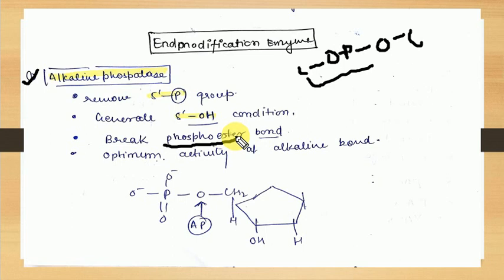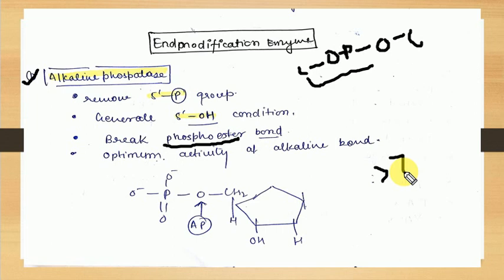After breaking the bond, alkaline phosphatase generates a 5 prime OH group in the nucleic acid sequences. The optimum activity of alkaline phosphatase is observed at alkaline medium — it requires greater than pH 7 for optimum action. Alkaline phosphatase acts on the oxygen of the phospho ester bond.